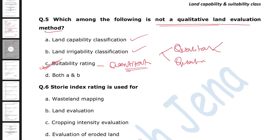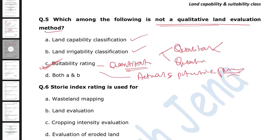Under quantitative land evaluation, we also have actual or potential productivity of that land. In quantitative land evaluation, we can scale the land with a certain number or scale, whereas in qualitative land evaluation that is not the case. So quantitative methods allow us to assign numerical values to assess land suitability.